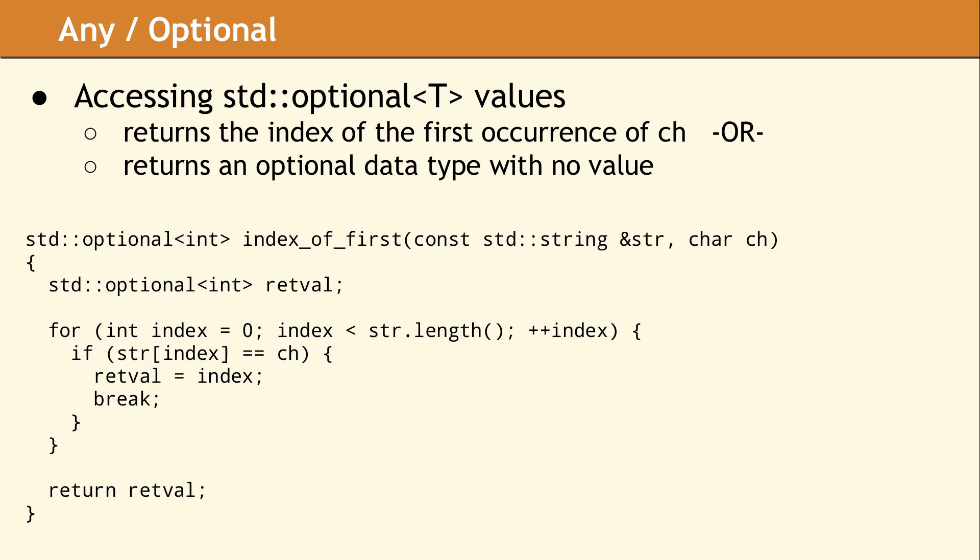The first line of the function default constructs the optional return value. This produces an optional variable containing no value. If we find a match, then the current array index is assigned to the return value and we break out of the loop.